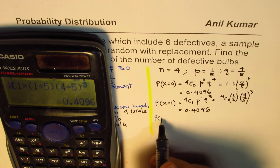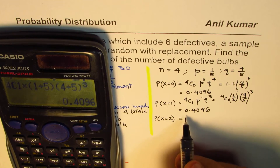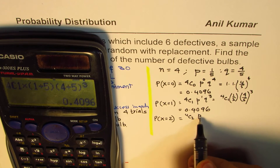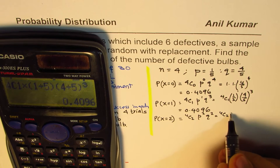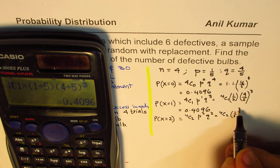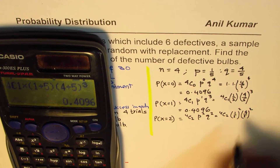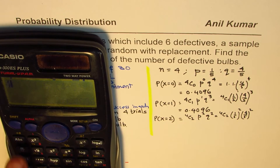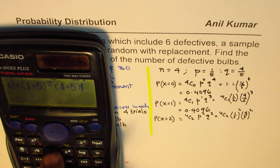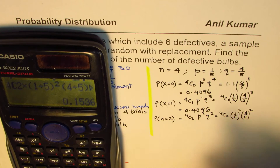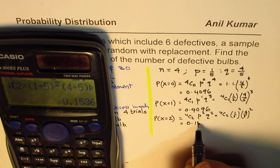Now let me find the value of P(X=2). That would be 4C2 × P^2 × Q^2, which is 4C2 × (1/5)^2 × (4/5)^2, and that equals, in decimals, 0.1536.